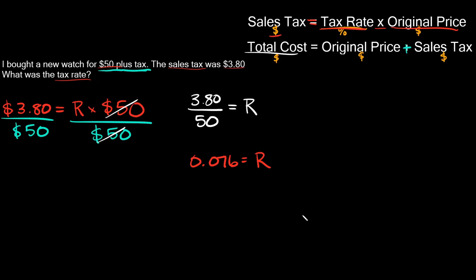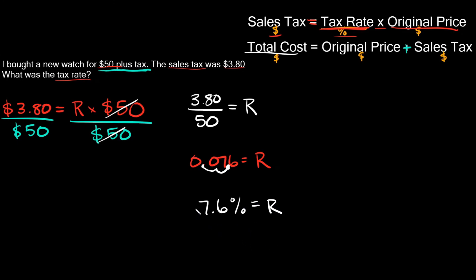The tax rate is 0.076, but the tax rate must be expressed as a percentage. To convert a decimal to a percent, move the decimal point two places to the right: one, two. So 0.076 becomes 7.6. The tax rate is equal to 7.6%.